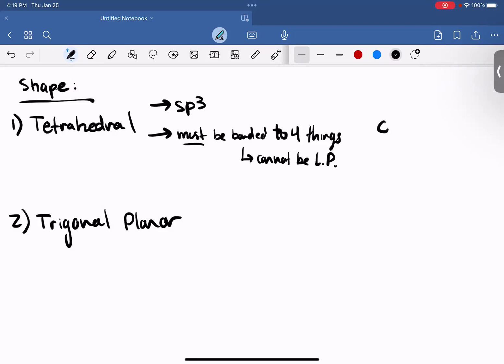It's impossible to be bonded to four things if there's lone pairs. For example, let's look at this carbon, it's SP3 hybridized. So I'm initially thinking tetrahedral, and it's bonded to four things. That means that the shape of this is tetrahedral.